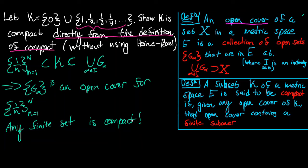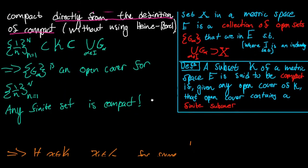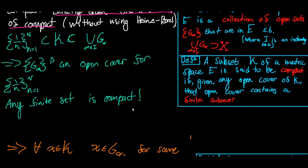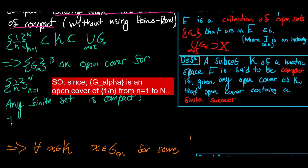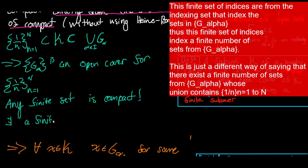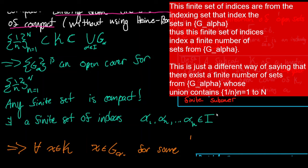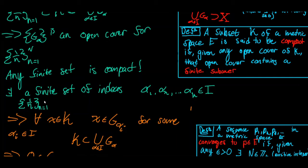What does that mean? It means that for any open cover of a finite set, that open cover contains a finite sub-cover for that set. So there exists a finite set of indices — alpha_1, alpha_2, and so on up to alpha_k for some finite k — where all these alphas are in our indexing set I, such that the set {1/n : n = 1 to N} is contained in the union from i equals one to k of G_{alpha_i}.